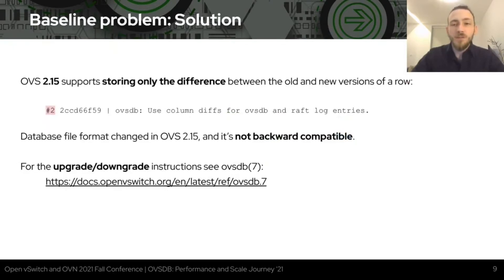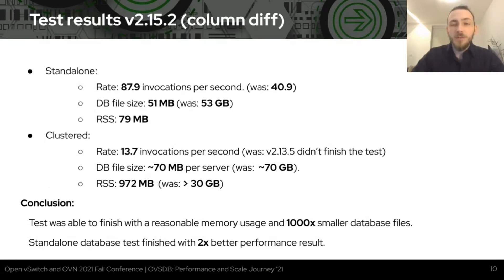The solution is to store only the difference between old and new versions of a row in a file transaction. That's what patch number 2 implements. The database file format change was made in OVS 2.15 release and it's not backward compatible, so please follow instructions in OVS DB documentation for upgrade and downgrade. The performance results for this change are significant: standalone database performed twice as well as in 2.13, and database file size decreased a thousand times from 53GB down to 51MB. The clustered database test actually finished, at a rate of 13.7 OVSDB client invocations per second, with reasonable database file size and RSS under 1GB per server.